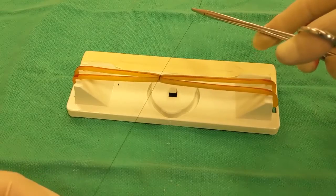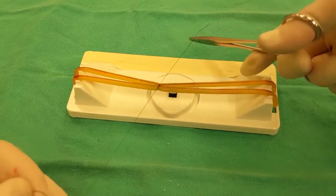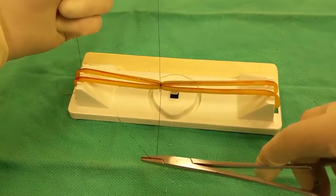As with all ligatures, a second square throw is placed to maintain your ligation, and then your first knot is secured in place with a second square knot.